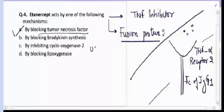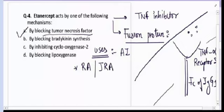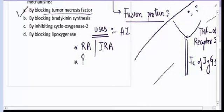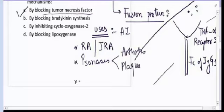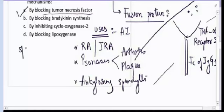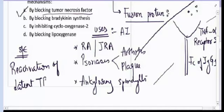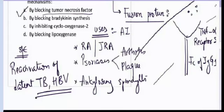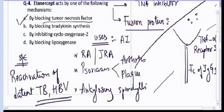Etanercept is used in various autoimmune diseases like rheumatoid arthritis, juvenile rheumatoid arthritis, psoriatic arthritis, plaque psoriasis, and seronegative ankylosing spondylitis. Its side effects include reactivation of latent TB and HBV infection, because these infections are controlled by TNF-alpha. If TNF-alpha is removed, these infections get reactivated. The answer for question number four is A — Etanercept is a blocker of tumor necrosis factor.